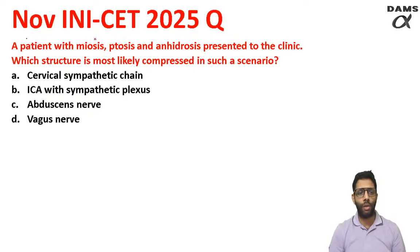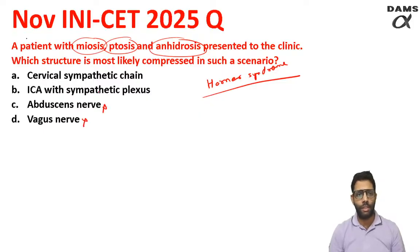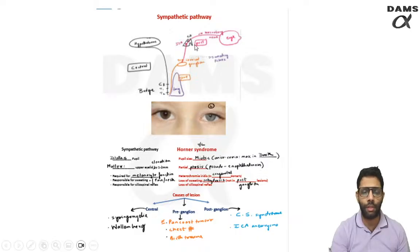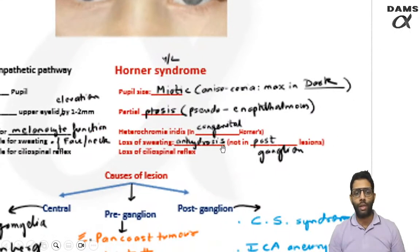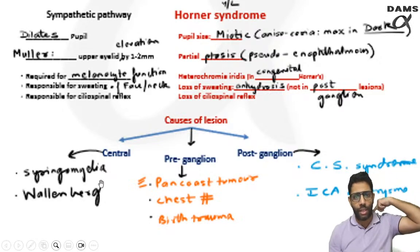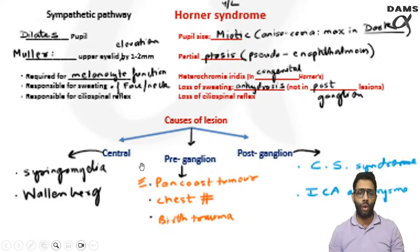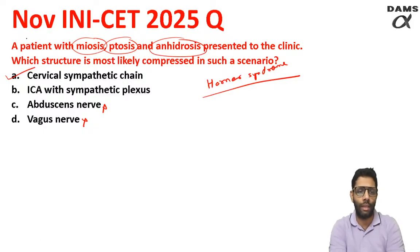The last question: a patient with miosis, ptosis, and anhidrosis — this is asking about Horner's syndrome. Horner's syndrome is always a unilateral condition involving the sympathetic pathway, so there is no relation to vagus or abducens. The sweating fibers do not go into the postganglionic fiber. So if there is postganglionic Horner's syndrome, like in ICA aneurysm or cavernous sinus syndrome, sweating is normal. Since this patient has loss of sweating and anhidrosis, it must be preganglionic — central or cervical sympathetic chain. Therefore, the cervical sympathetic chain is the most likely answer.